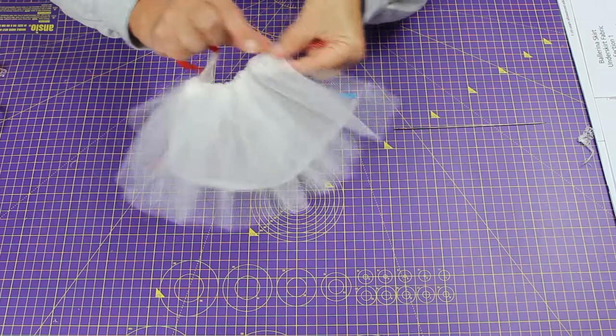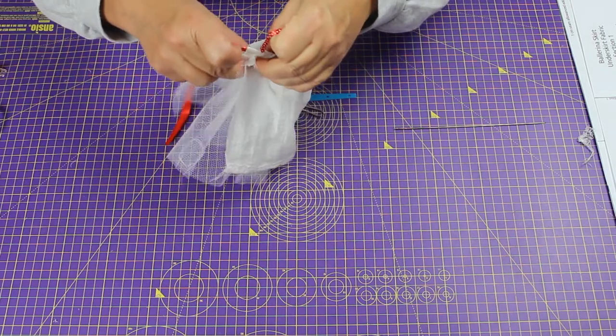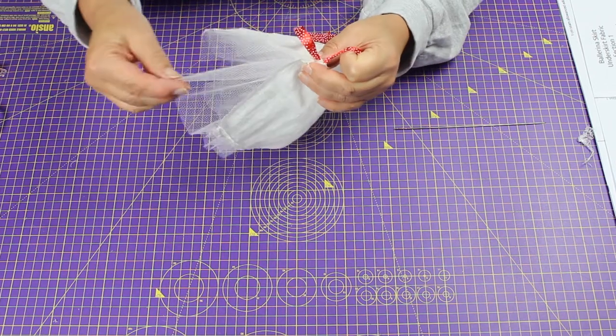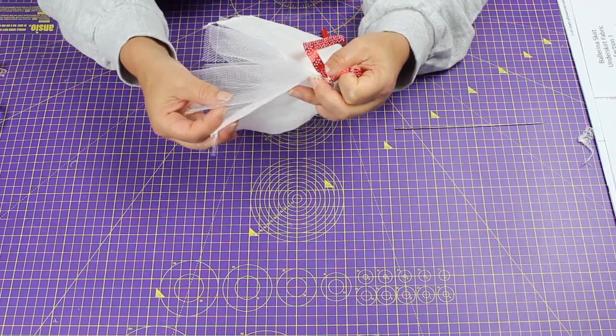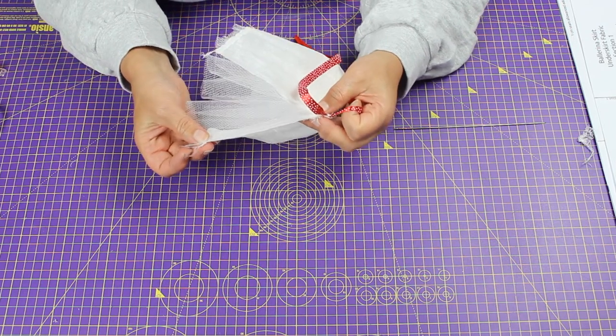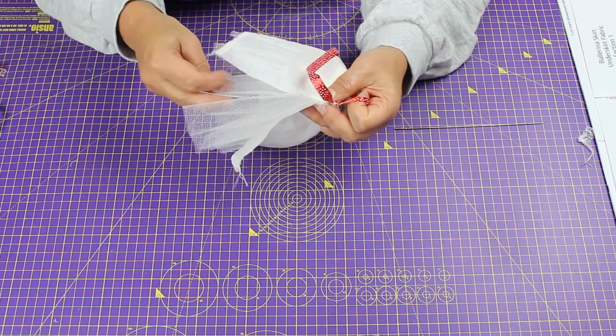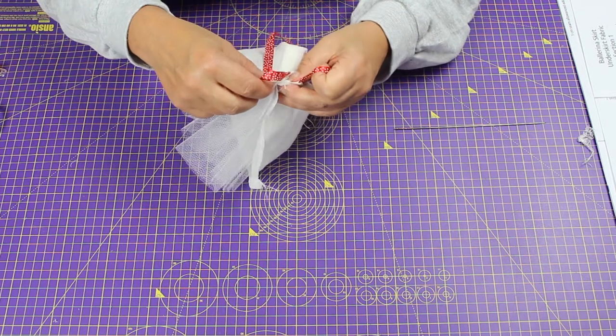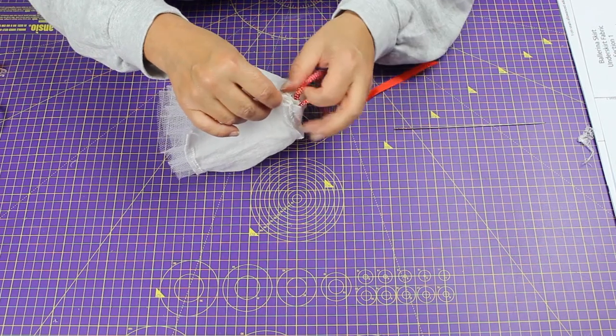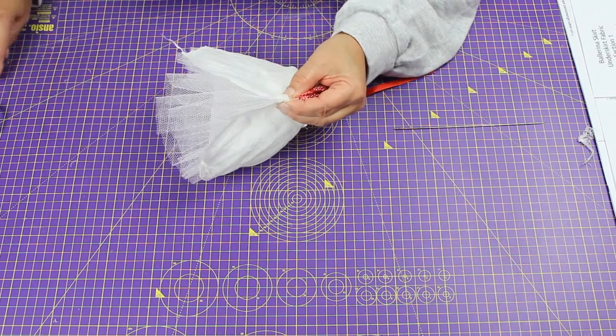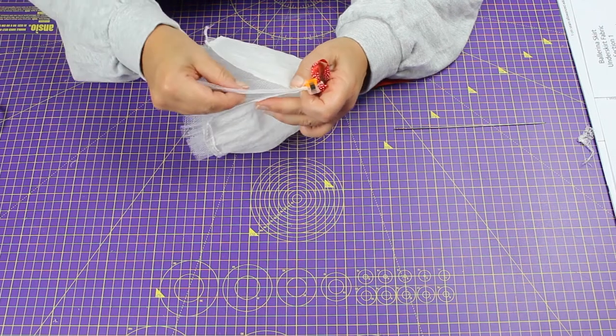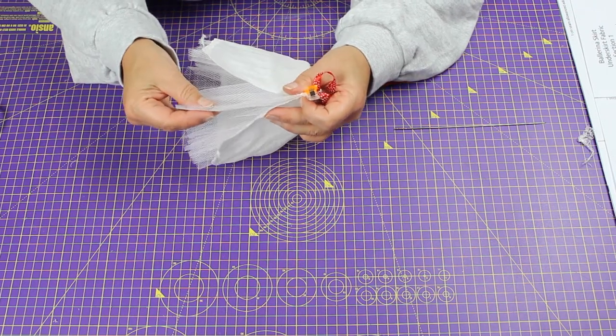The only thing I need to do now is pop the center back seams together. Make sure that the net and the fabric are together there, and the net and the fabric are together here. I'm going to clip them together and stitch up the back seam.